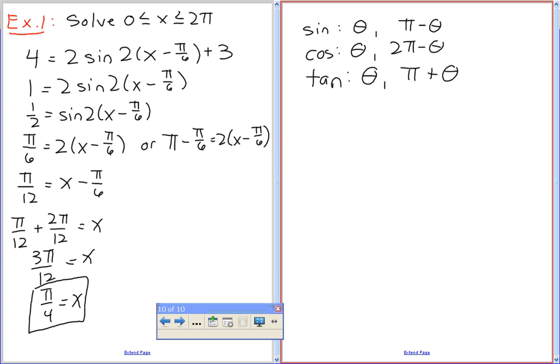And for tan, this is going to be theta and π plus theta. Those are identities. If you remember, that's also CAST rule. So π by 6 is here. The other value of sine is going to be π minus π by 6. There should be an identity for that.